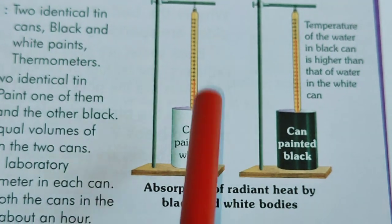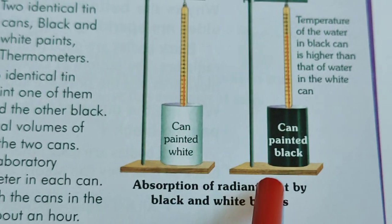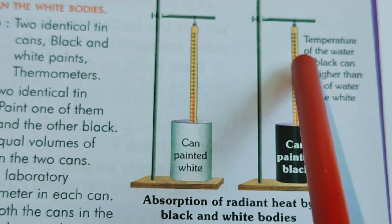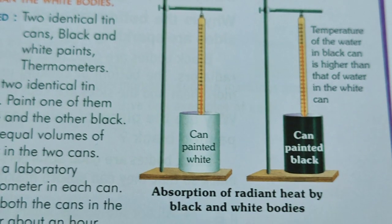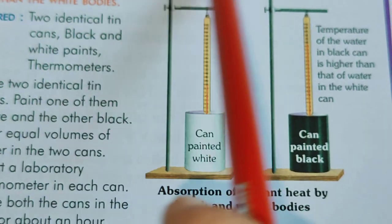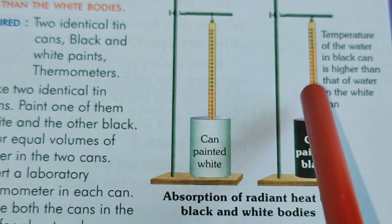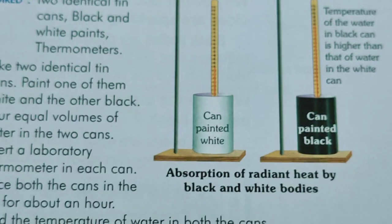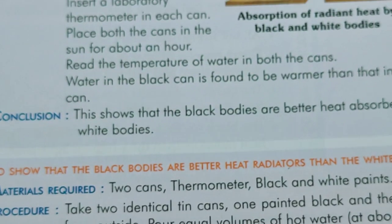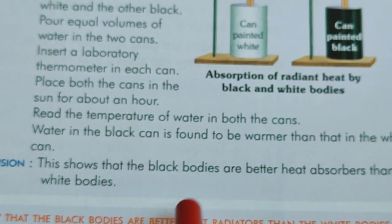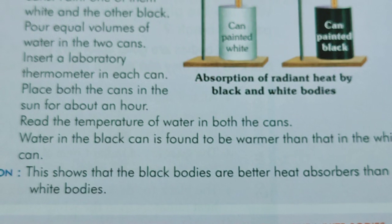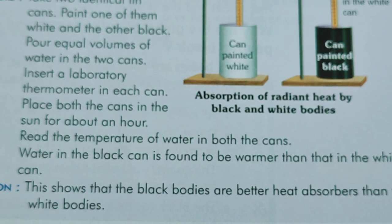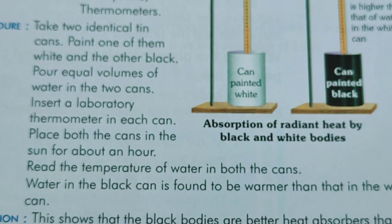As you can see in the setup, the temperature of the water in the black can is higher than in the white can. This proves absorption of radiant heat by black and white bodies — this rise in temperature depends on how much heat is absorbed by each can. We can conclude from this activity that black bodies are better heat absorbers than white bodies. That's why we try to avoid black clothes during very hot summer days and prefer white-colored clothes instead.